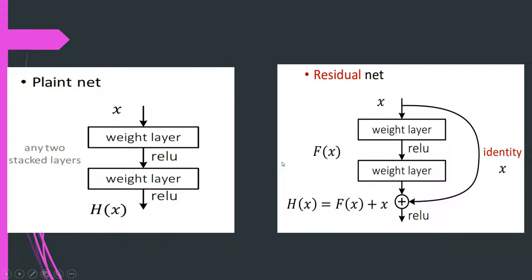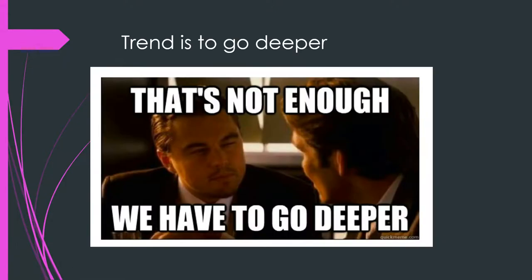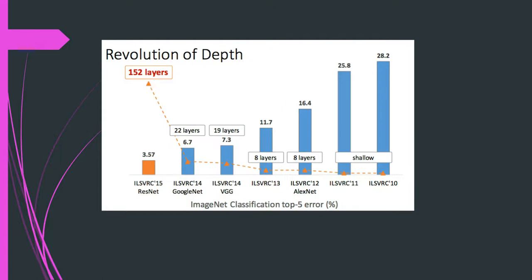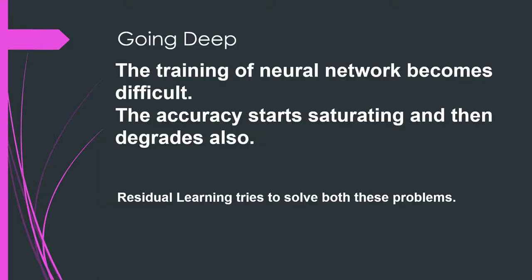The trend is to go deeper — it is believed that the deeper we go, the better features we learn and the better model we build. This is evident from ImageNet challenge results. In 2012, AlexNet, the first convolutional network to win ImageNet, had just 8 layers. In 2013 the winner also had 8 layers. In 2014 we had VGG-19 and GoogLeNet with 22 layers. In 2015 ResNet had 152 layers. The error rate clearly shows deeper is better, however simply going deep causes difficulty in training.